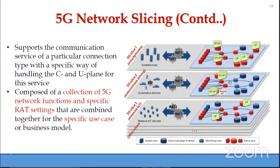A second slice and third slice (for massive IoT connection) make use of appropriate radio access technologies like RAT1 and RAT3. User plane and control plane use specific devices. The physical infrastructure is the same, but we have different logical networks which can be configured according to the requirement of each application.